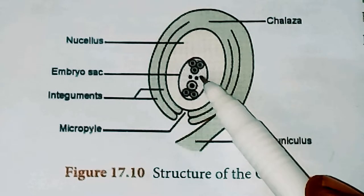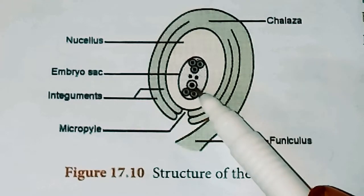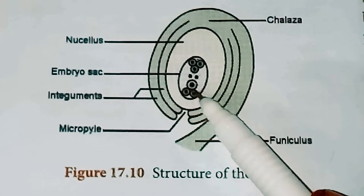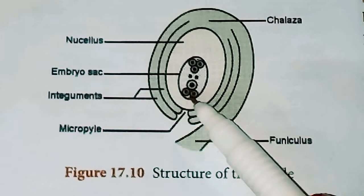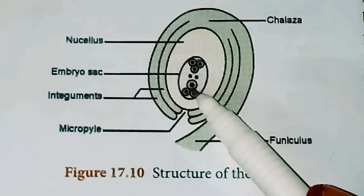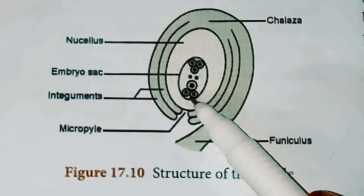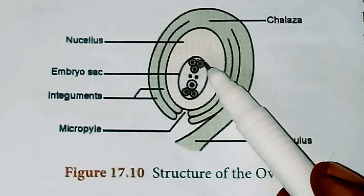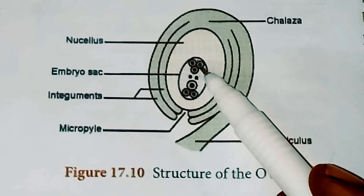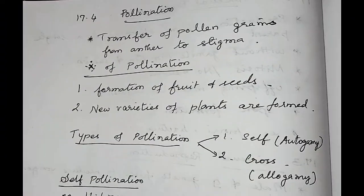This is the embryo sac. The nucellus consists of the embryo sac, and this embryo sac contains seven cells and eight nuclei. Three cells are present at the micropyle end — the egg apparatus. In the egg apparatus, the center cell is called the egg cell, and the remaining two cells are called synergids. The other three cells at the chalazal end are called antipodal cells. The two central nuclei are called polar nuclei. This is the structure of the ovule.